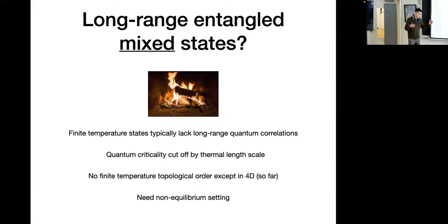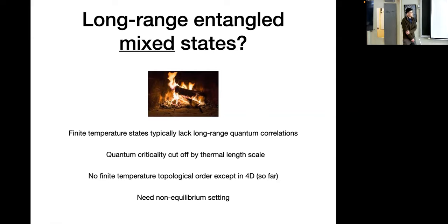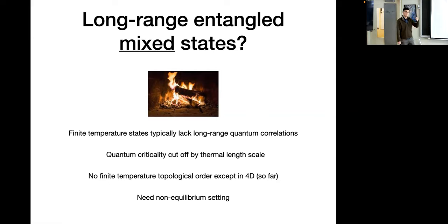It's clear that equilibrium Gibbs states may not be the best place to look. We really want to find a highly non-equilibrium setting to see any instances of non-trivial long-range entangled mixed states. [Question from audience about four dimensions.] Here I have in mind specifically a toric code model of topological order, in which in four dimensions you can have loop-like excitations rather than point-like anyon excitations. It turns out at finite temperature it's much harder to proliferate these loop-like excitations, so the topological order is stable.